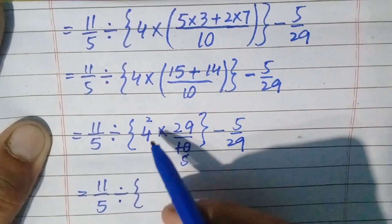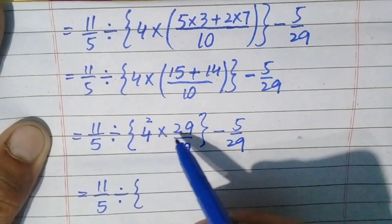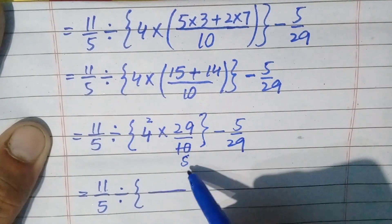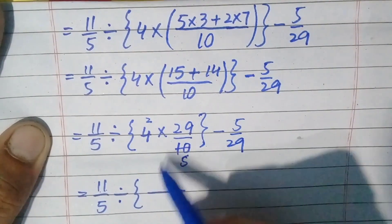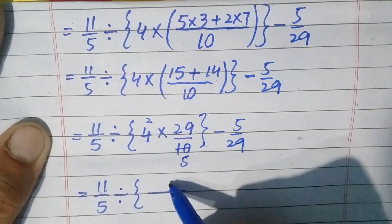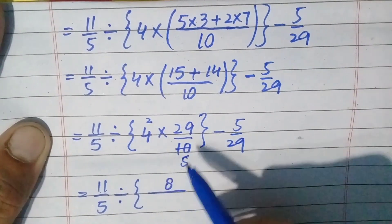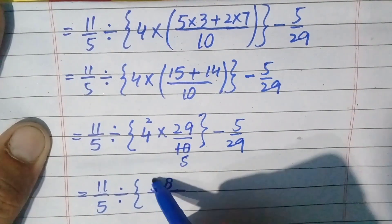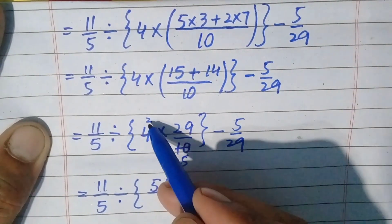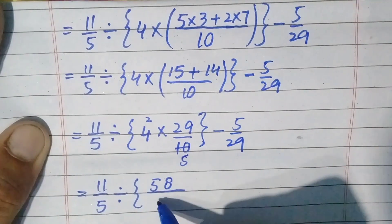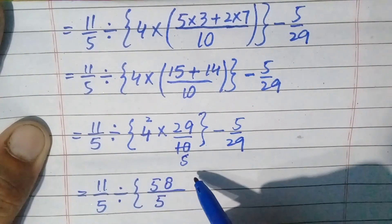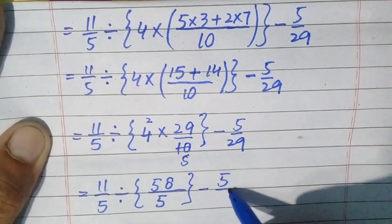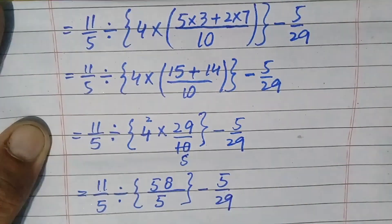Now we multiply 2 with 29 in the numerator, keeping the denominator as 5. So 2 times 29: 9 times 2 is 18, carry 1, 2 times 2 is 4, plus 1 is 5 — so 29 times 2 is 58. The denominator remains 5. Write the remaining part: minus 5/29.